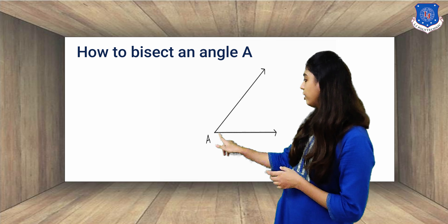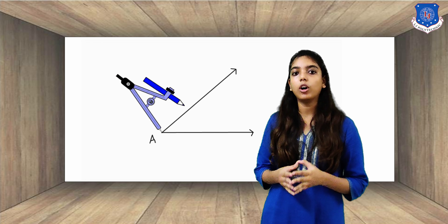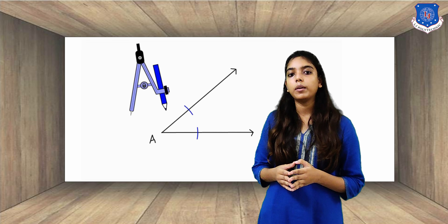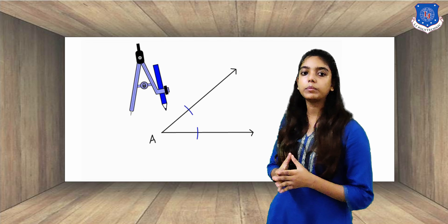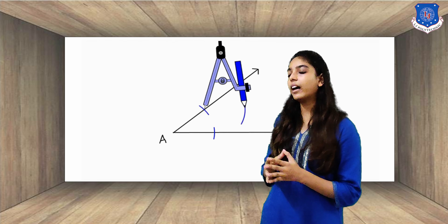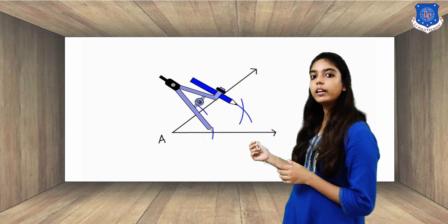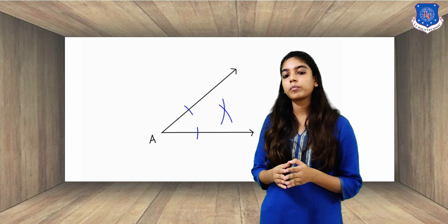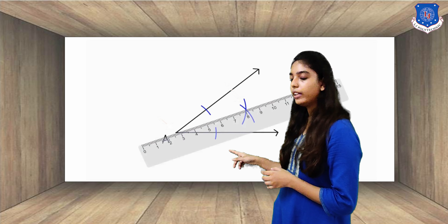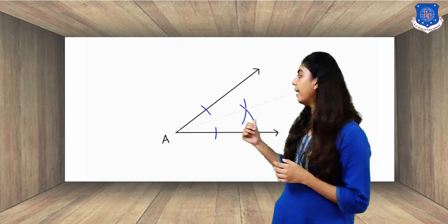Now we are going to learn how to bisect angle A. Firstly, to bisect an angle, take a compass. Make an arc on the first angle line and a second angular line — make an arc on both lines. Now place the compass on the first arc and with the same radius, make an arc on the interior part of the angle. In the same way, place the compass on the second arc line and repeat the same process. Now to make the bisector line, take a scale and draw a line which connects both intersection points from A to the bisector. Now your bisector of the angle is ready.